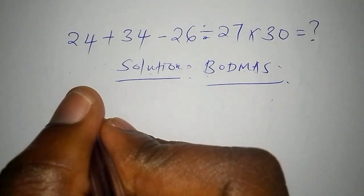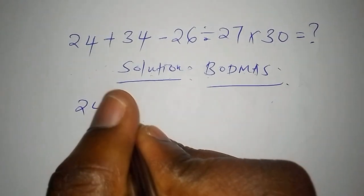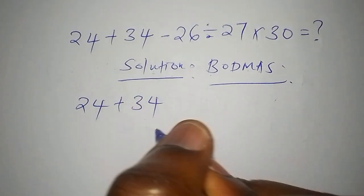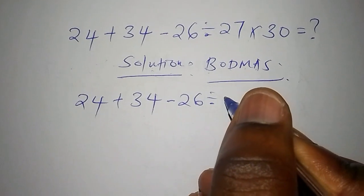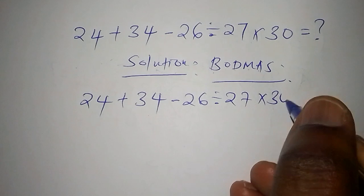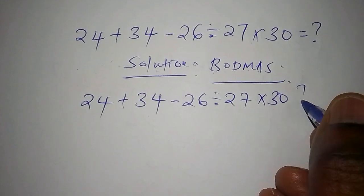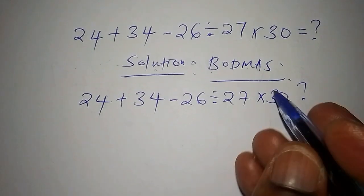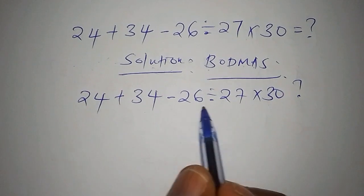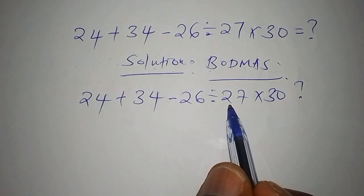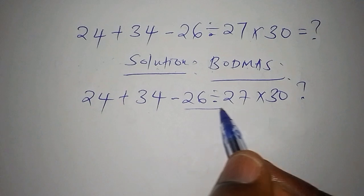So the question is 24 add to 34, subtract from 26, divide by 27, multiply by 30. So that is the question. So we are going to look at our BODMAS here, and our BODMAS talks of the division first. So we are going to work out this area, 26 divided by 27 first.